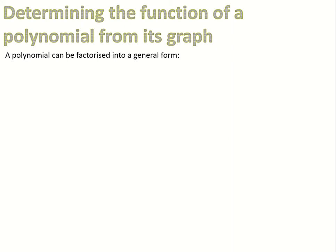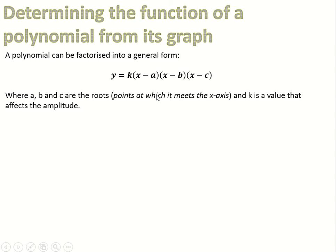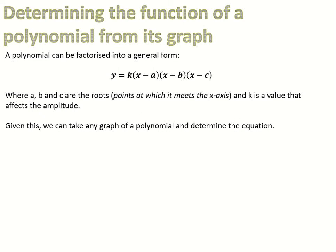A polynomial can be factorized into a general form, which allows us to determine the function of a polynomial from its graph. In general, a cubic will be three brackets: k times x minus a, x minus b, x minus c. The values a, b, and c are the roots — the points where it meets the x-axis — and k is a value that affects the amplitude, stretching the graph up and down.